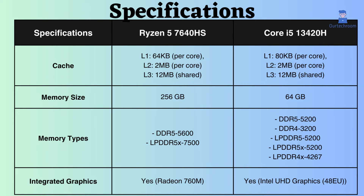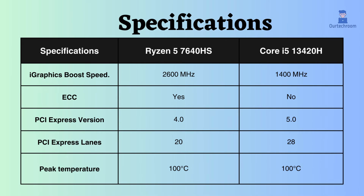Both of these processors support integrated graphics. Intel utilizes the Intel UHD Graphics 48EU graphics processor, while Ryzen employs the Radeon 760M graphics processor. Additionally, the boost frequency of the Ryzen 7640HS graphics processor appears to be higher, making it outperform Intel for graphics-intensive tasks. The graphics performance of Ryzen is slightly superior to that of Intel.